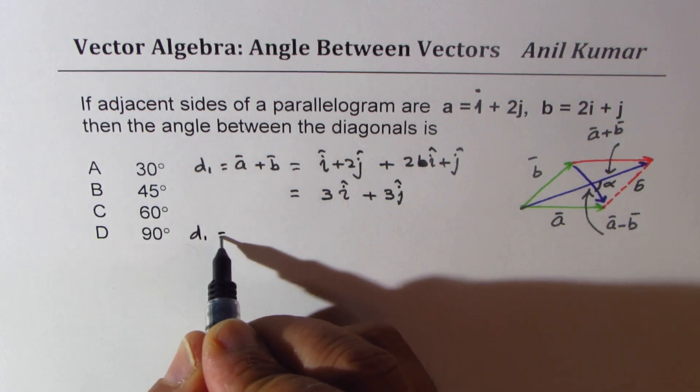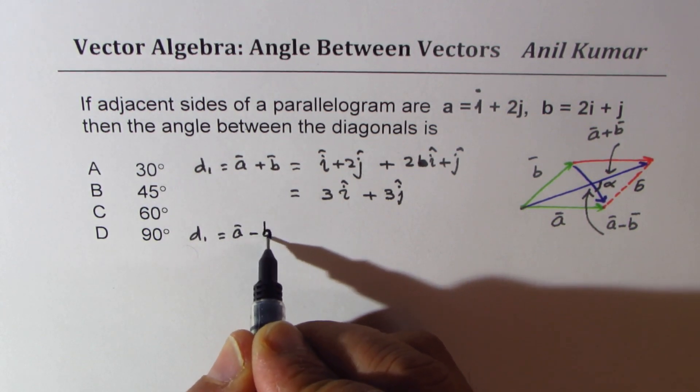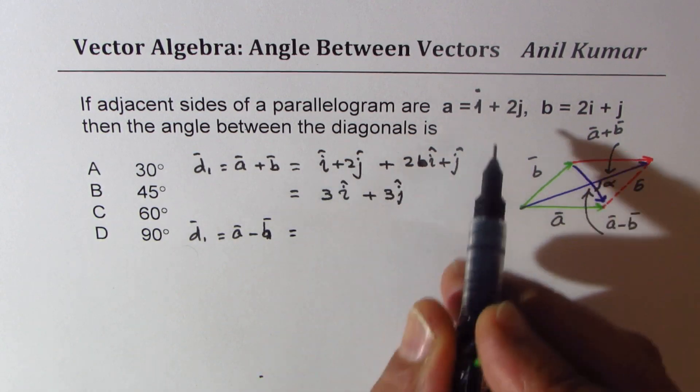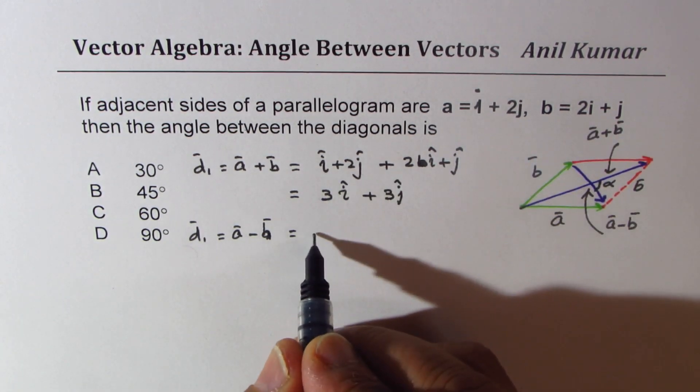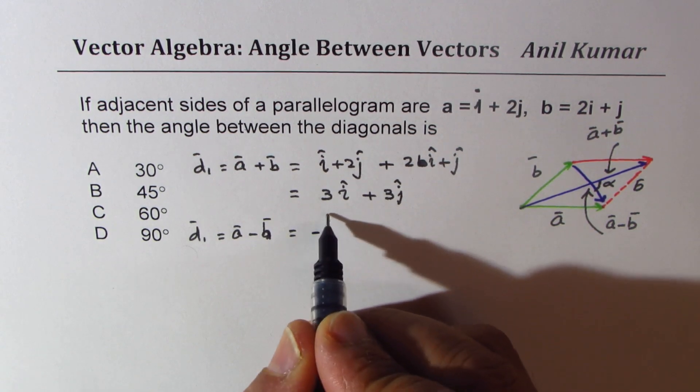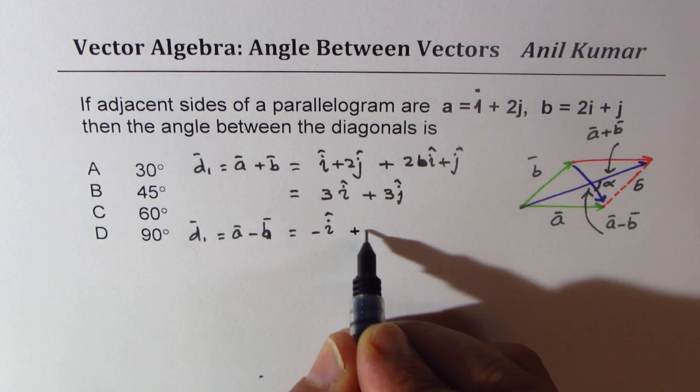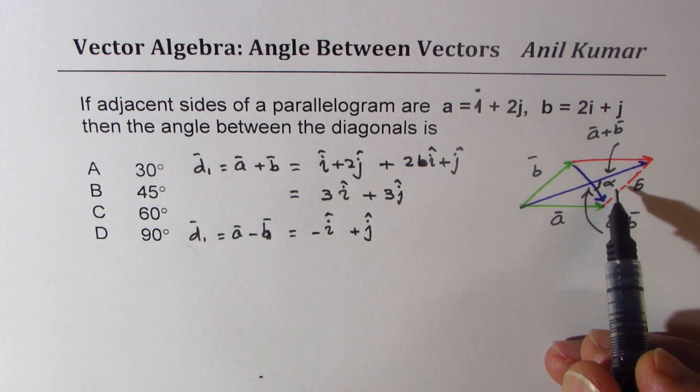Now what is the other diagonal? The other diagonal is difference of these two. So let's call this as a - b. So a - b will be 1 - 2 will be -i, and then 2j - j will be +j. So that becomes the other diagonal.